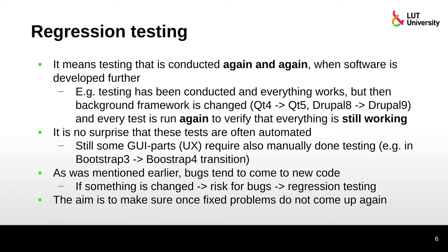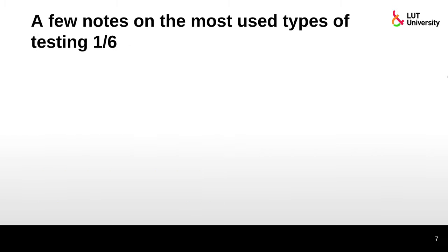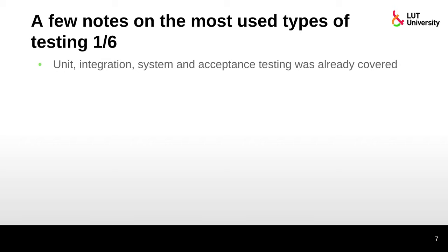The aim is to make sure that once-fixed problems do not come up again. It's really painful if you are fixing the same problem year after year every time something changes. To summarize, the most commonly used testing types we've discussed are unit, integration, system, and acceptance testing.